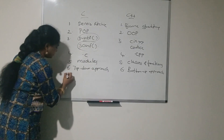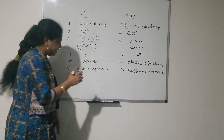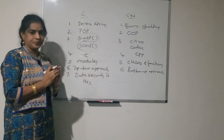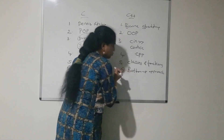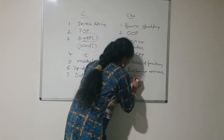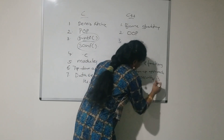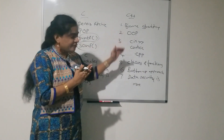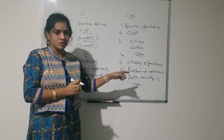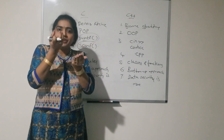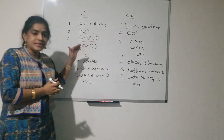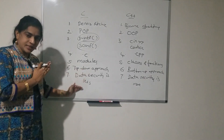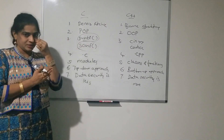In C, data security is less. In C++, as we use objects, data security is more. Data and functions are encapsulated in C++, so as the data is encapsulated, the security of data is more in C++.